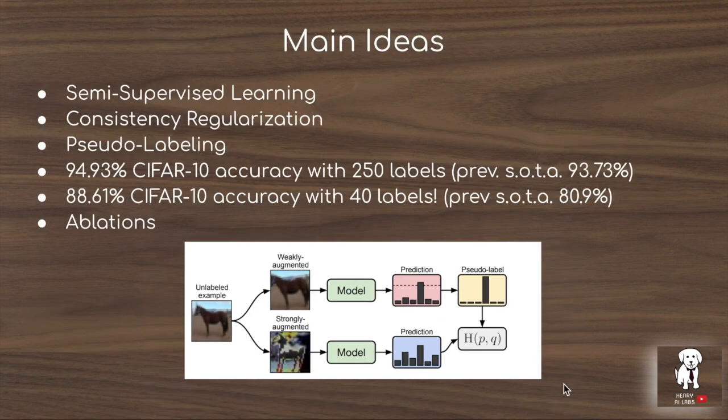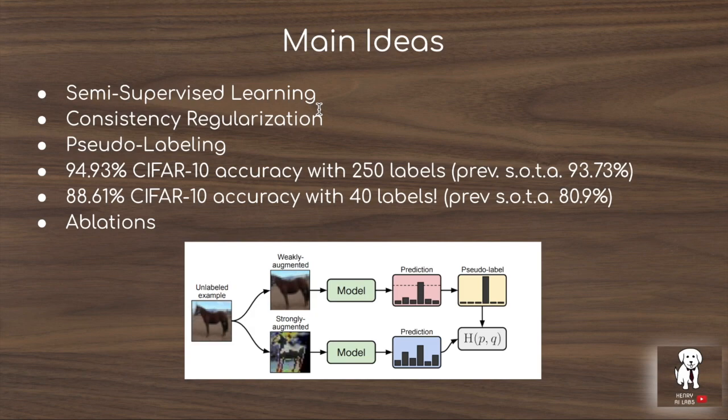To recap some of the main ideas in this paper: semi-supervised learning describes a paradigm where you have a large dataset and only a small percentage of it is labeled. These algorithms try to make use of the large unlabeled data in order to improve the supervised learning performance, validated on an external test set. Consistency regularization, such as unsupervised data augmentation, is one of the most popular techniques for semi-supervised learning. Usually this is done by penalizing the model for making different predictions on data samples after they have been augmented — augmentations can include things like rotations or color changes.